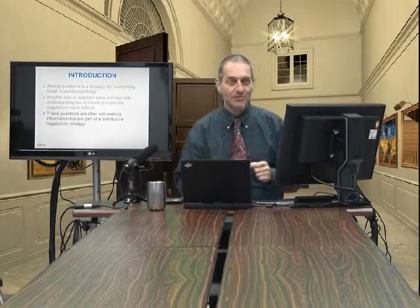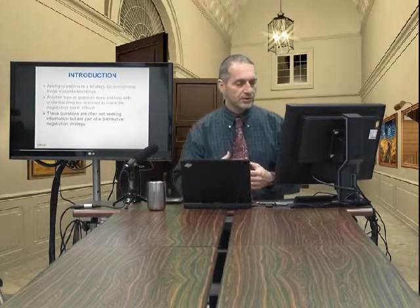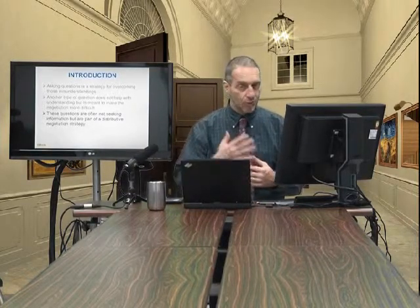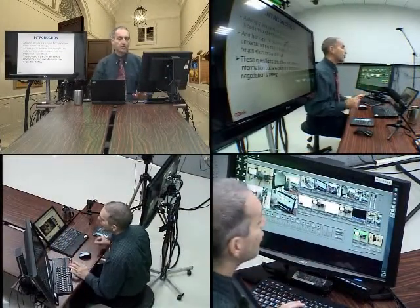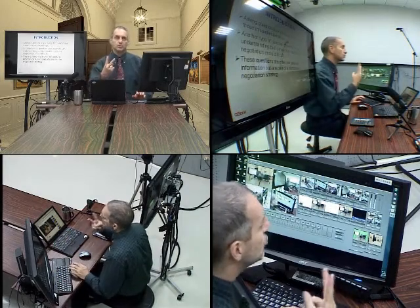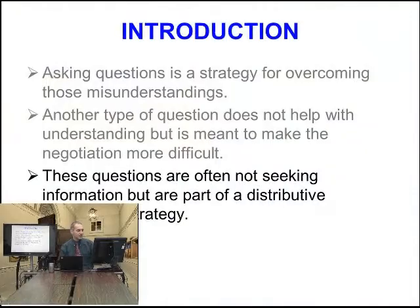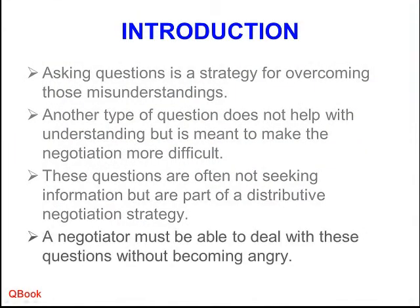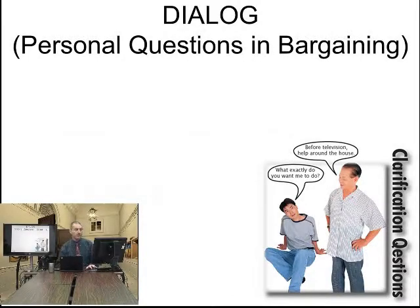By doing this, you fool them — you trick them — into thinking you've already reached your limit, or that you're over your limit, or that there's a problem and you can't go any further. These are the two types of questions: one really a question, one not really a question at all. A negotiator must be able to deal with these kinds of questions without becoming angry or upset. Let's look at an example to make this clearer.